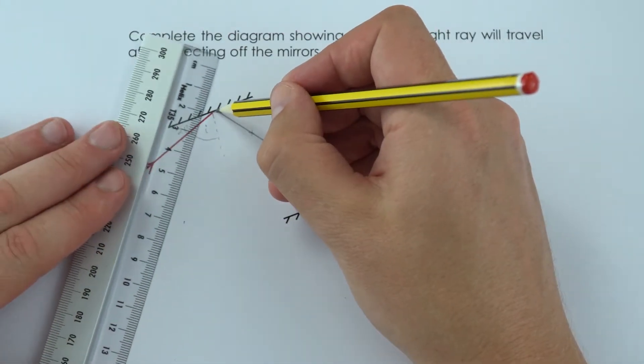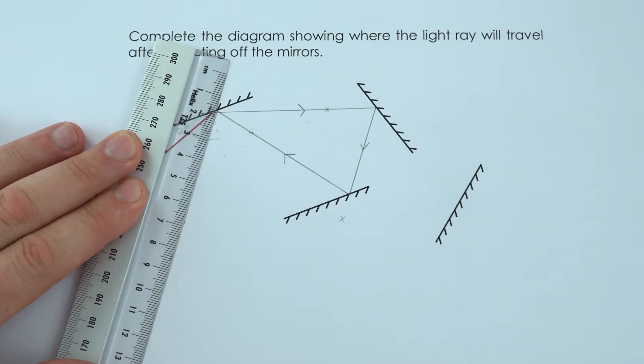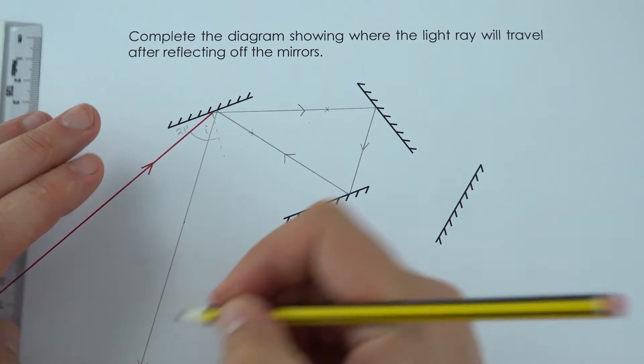Now it does get a little bit messy over here but I've taken my time to do it as accurately as possible and then the ray of light just comes out like that.